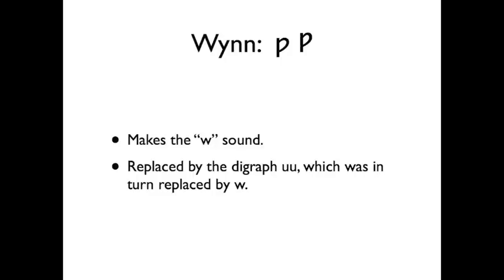The last letter we'll look at today is the Wynn. This letter is of Germanic origin and is derived from the Anglo-Saxon rune for joy. It makes the phoneme W in many texts, before eventually being phased out for a literal W digraph — meaning two letters appearing together to make one sound — and that literal W eventually becomes the modern letter W.